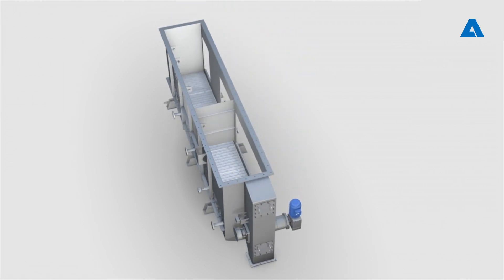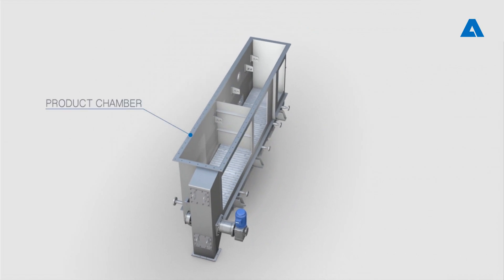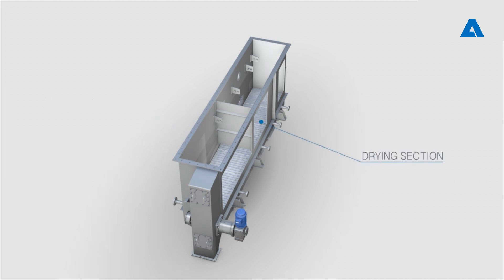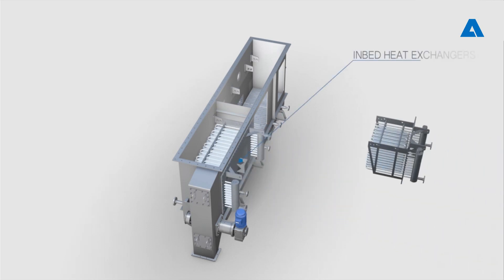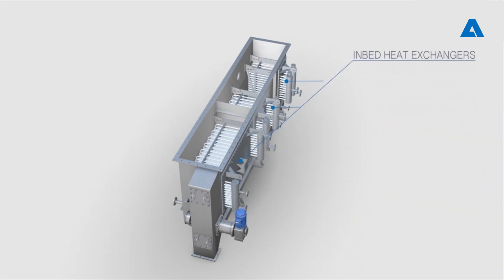Product chamber: this is the central part of the fluid bed, where intense particle movement in the fluidized particle layer provides optimized heat and mass transfer. Drying and cooling sections can be combined in one device. Andritz Separation offers different types of in-bed heat exchangers that can be installed in the product chamber to make the system even more efficient.